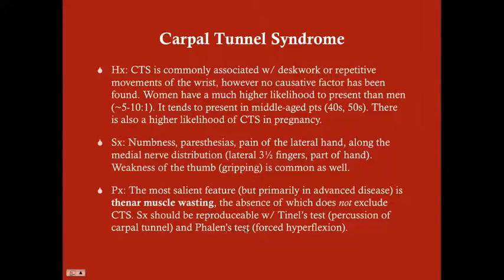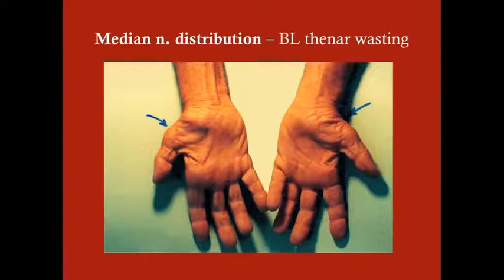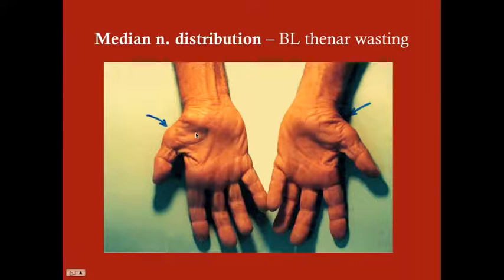Symptoms should be reproducible with two tests: Tinel's test and Phalen's test. Thenar wasting, when present, shows loose skin where there used to be a large meaty thenar muscle. In carpal tunnel syndrome it's usually unilateral, though bilateral cases can occur.